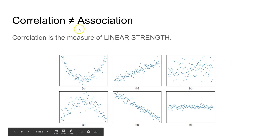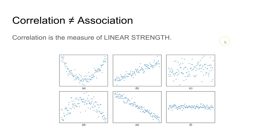These examples are from my last video. Remember, correlation is not association. Looking at the first scatter plot, we have a pretty strong association, but it's curved, which means the linear strength is essentially zero — there's nothing linear about this. So this would be an R of 0. Notice that we have an R of 0, which means no correlation, yet this is a strong association. There's a big difference there.